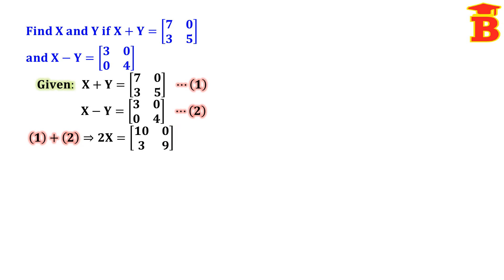Adding equations 1 and 2 gives left side 2x, and right side the matrix [10, 0; 3, 9]. Dividing both sides by 2, x equals one half times the matrix [10, 0; 3, 9]. So this is the x value.